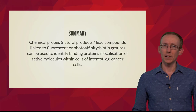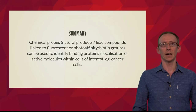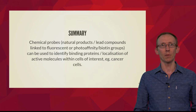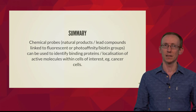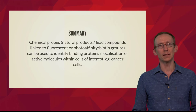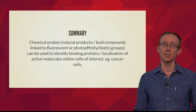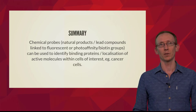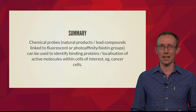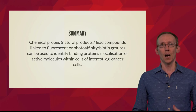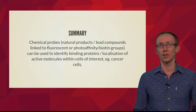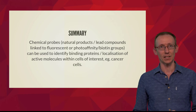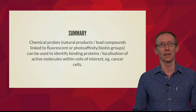To summarise: chemical probes can be formed from natural products or lead compounds by linking them to fluorescent, photoaffinity, or biotin tags. We can use these to identify binding proteins or the localisation of active molecules within cells of interest, such as cancer cells or malaria parasites. We're going to demonstrate this through a case study where it has been used to identify new targets in the discovery of new anti-cancer agents.